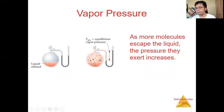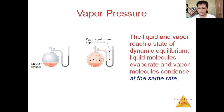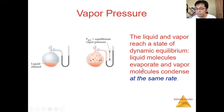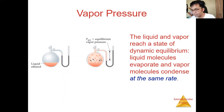So the more liquid vaporizes at a given temperature, the more pressure it exerts. The system will reach a state of dynamic equilibrium when the liquid molecules evaporate and the vapor molecules condense at the same rate — vaporization and condensation at the same rate. That is the state of dynamic equilibrium.